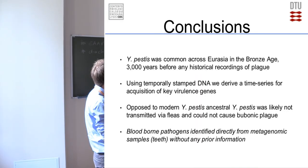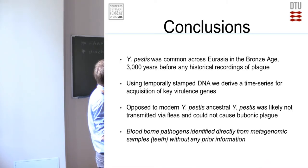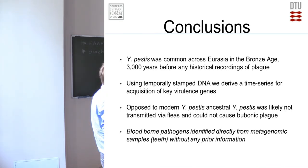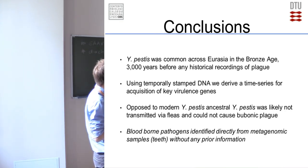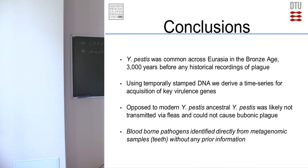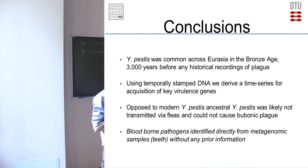Basically: Y. pestis was common across Europe and Asia in the Bronze Age, more than 3,000 years before any recorded plague. We can derive a time series of the acquisition of several virulence genes. We don't think it was able to be transmitted by fleas at that stage, and it could not cause bubonic plague. And importantly for the ancient DNA field, we show that blood-borne pathogens can actually be identified directly from metagenomic data, without any prior information of the pathogen being present.